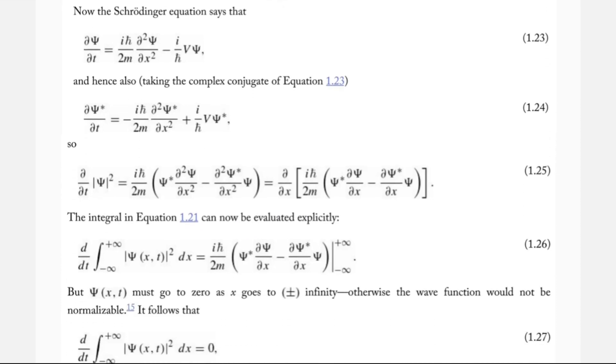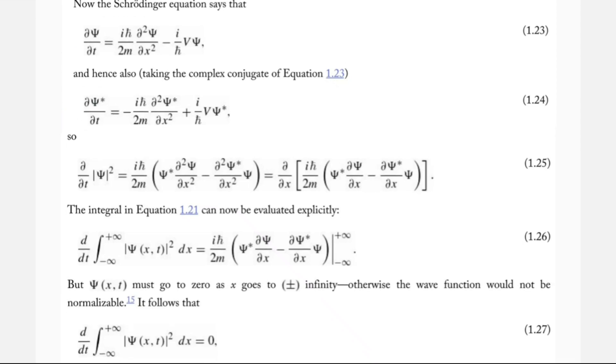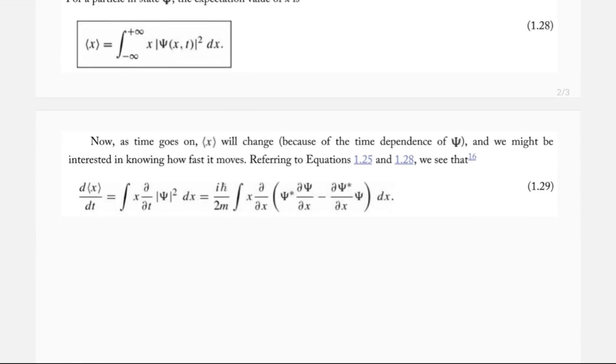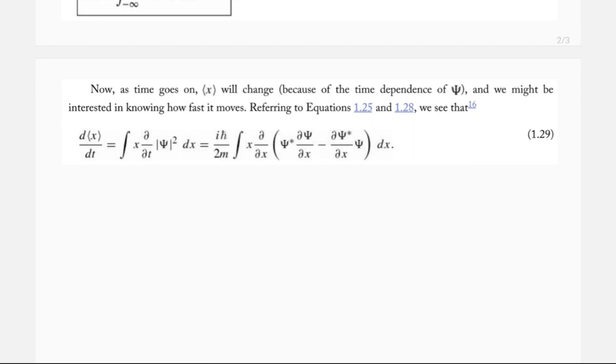And so this is the full proof, and you can go through it in the textbook yourself and prove it. But essentially, what we end up doing is we have the wave function, the derivative of the wave function with respect to t, we get the complex conjugate of that, and we can plug those things in, and we can prove through equation 1.29 what the derivative with respect to t of the expectation value of x is.